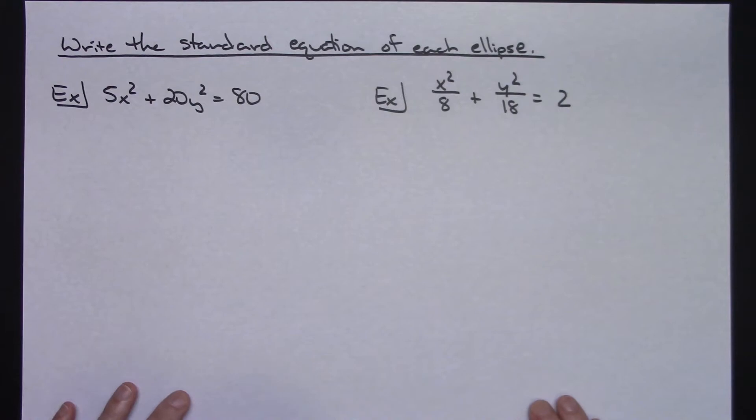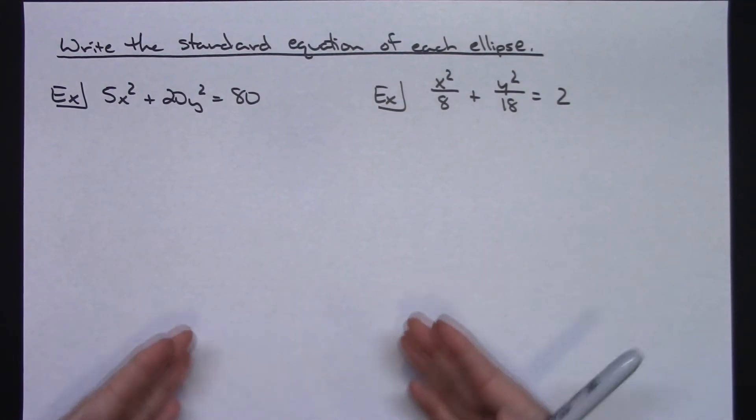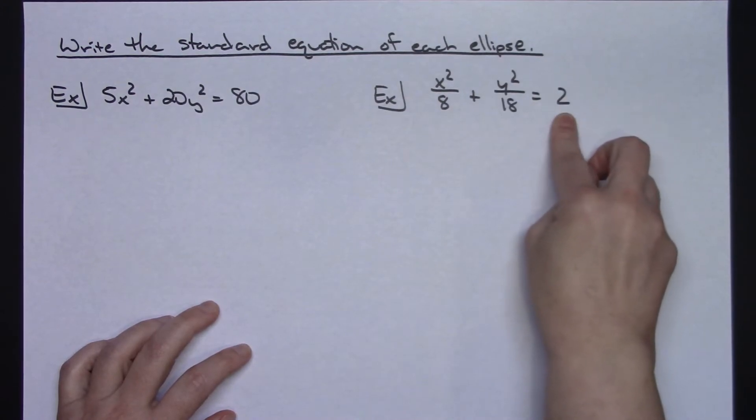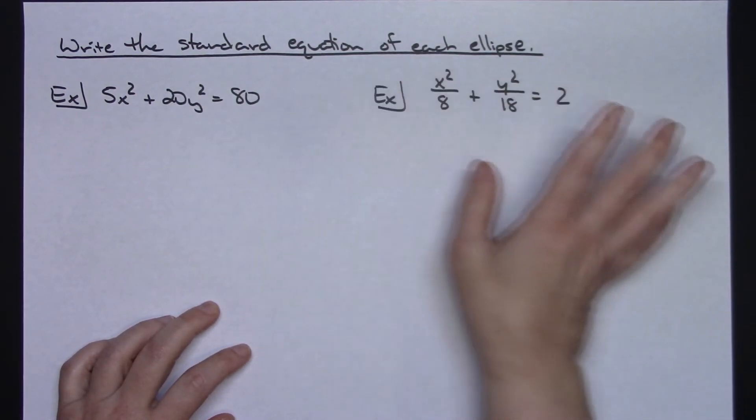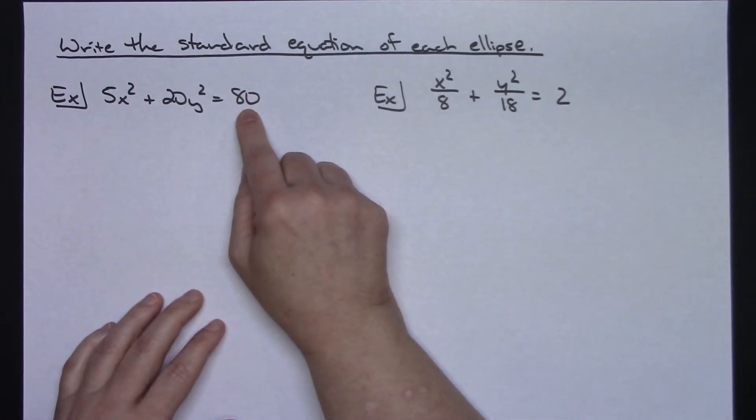Let's say it just says write the standard equation of an ellipse and they give you an equation and it's not the standard equation. Now you are going to focus on the fact that you know that you need the ellipse to be 1. It has to be equal to 1 on both of these.